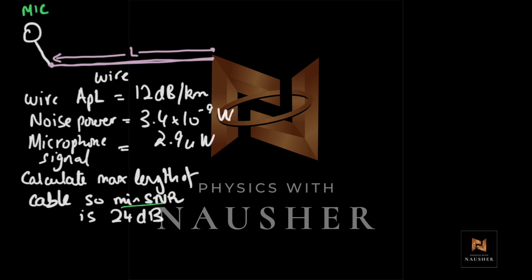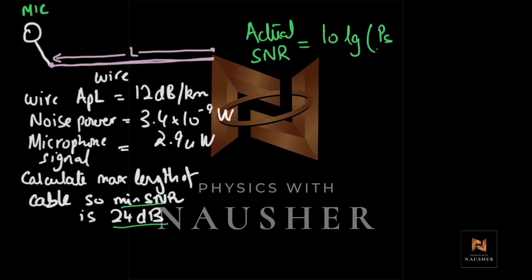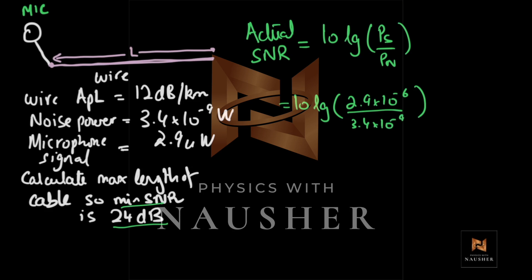The condition is that the minimum SNR must be 24 decibels. First, calculate the actual SNR: 10 log (power of signal / power of noise) = 10 log (2.9 × 10⁻⁶ / 3.4 × 10⁻⁹). This gives approximately 29.3 decibels. So your actual SNR is 29.3 decibels — you are 29.3 decibels above the noise.